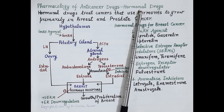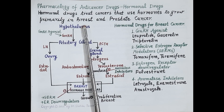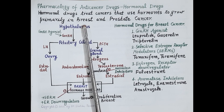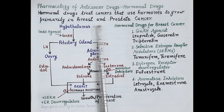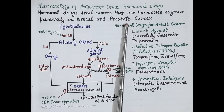In today's video we are going to study pharmacology of hormonal drugs that are used in the treatment of some specific types of cancers. One of the most important risk factors for breast cancer is increased estrogen, while in prostate cancer the main risk factor is increased testosterone.